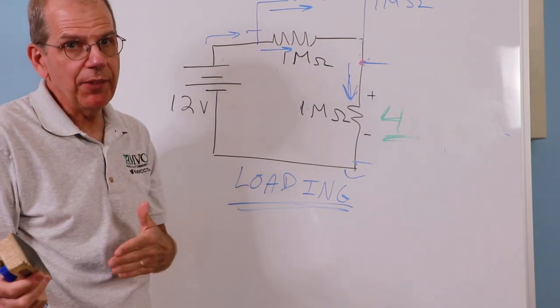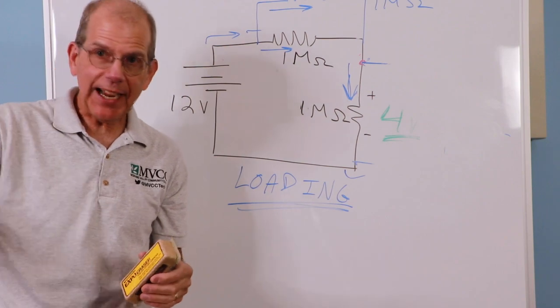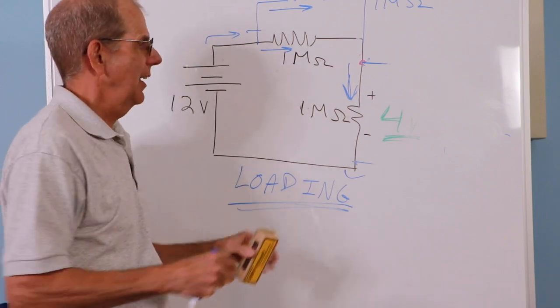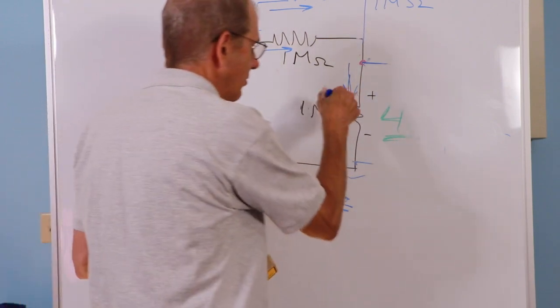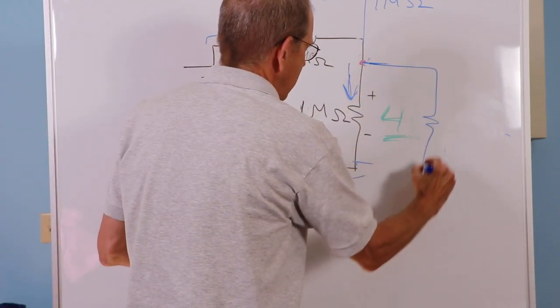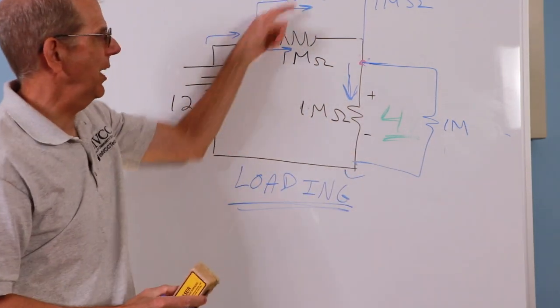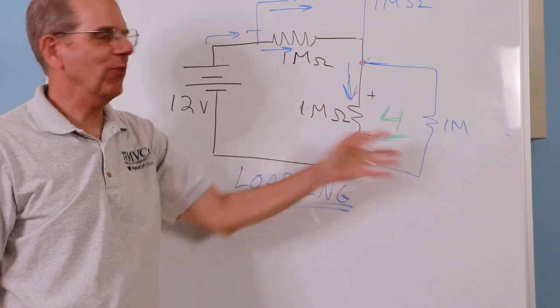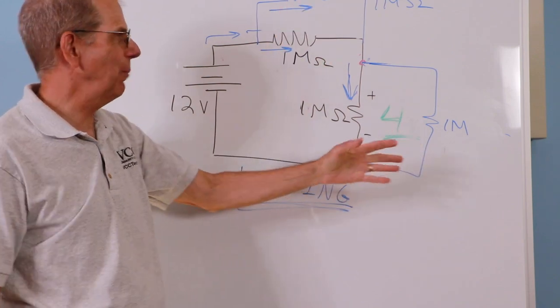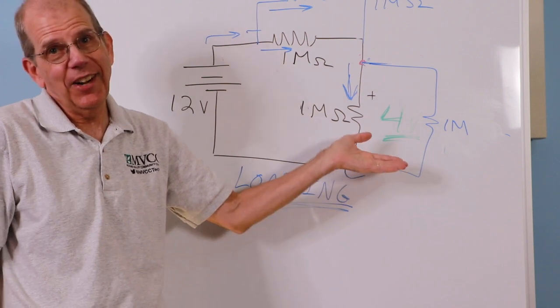So, we have to be aware of that. Now, just to make things even more fun, if you took a second meter, and you stuck it across this other resistor, what do you think happens? Well, now it's 1 meg in parallel with 1 meg over here, or 1 meg in parallel with 1 meg over here. So these two things become equal again. And you will measure 6 volts and 6 volts. It's kind of funny in a way.